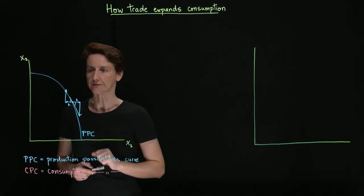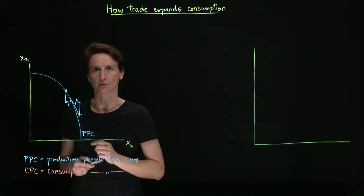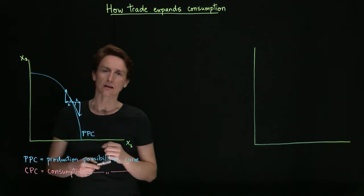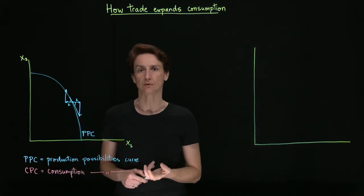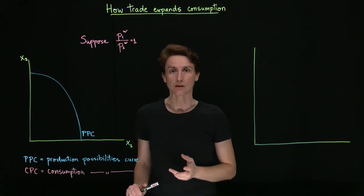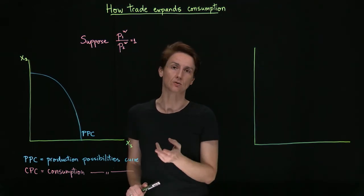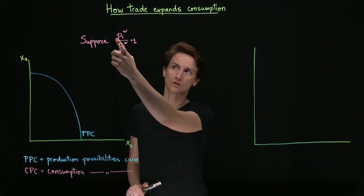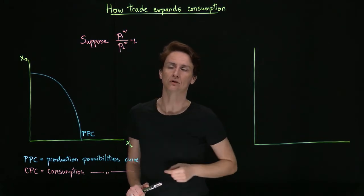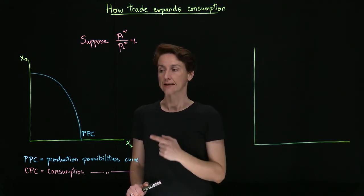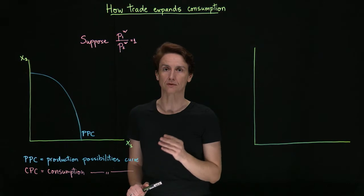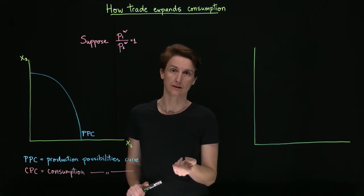So starting from this curve, from the production possibilities curve, let's see what happens when we introduce the possibility of trade. Suppose that on the international market the two goods have equal prices, so that P1 world over P2 world equals one. That tells us something about the slope of the consumption possibilities curve as we'll soon see.